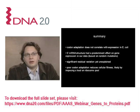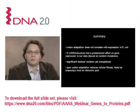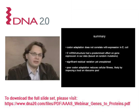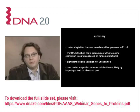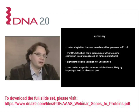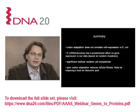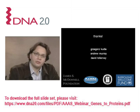In summary, codon adaptation was not observed to correlate with expression in our study, whereas five prime mRNA structure had a predominant effect on gene expression. Our data are based on random mutations and this was the strongest single mechanistic explanation we could find. There is also a significant amount of residual expression variation left unexplained, which hopefully we'll hear about from Mark later today. Finally, poor codon adaptation is observed to reduce cellular fitness, likely by imposing a load on the ribosomal pool, though other mechanisms are certainly possible.